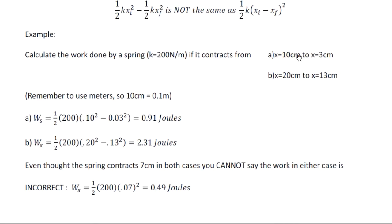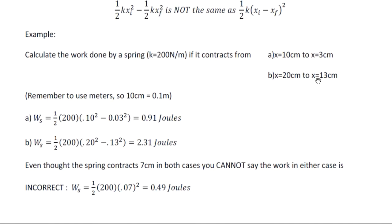To do it correctly, each example gives a different answer. For example A, the initial position is 0.1 m and the final is 0.03 m, giving x initial squared minus x final squared, with an answer of 0.91 joules. For example B, the answer is 2.31 joules. The key is to square each position first and then take the difference — do not take the difference first and then square it. That is incorrect.